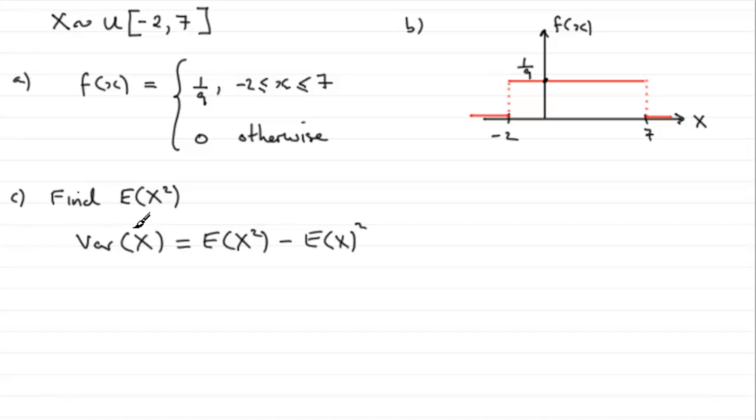Because we should know this for a uniform distribution and we should know what E of X is also for a uniform distribution. Knowing these two values, we can find out E of X squared. So what is the variance of X and what is the mean E of X?